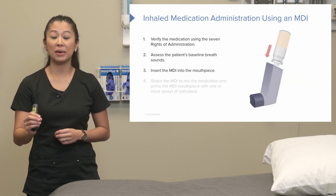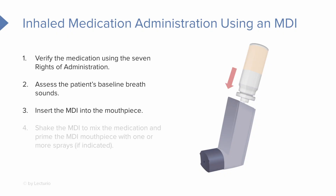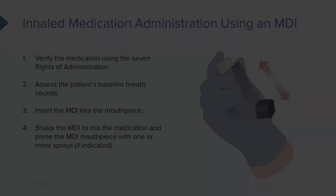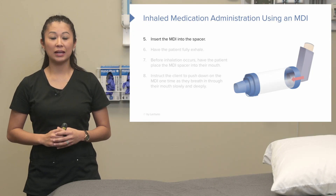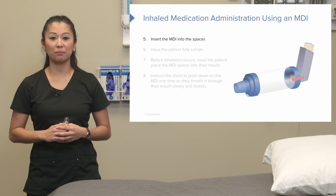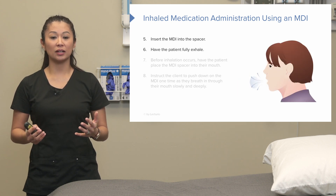Now let's talk about medication delivery. Take the drug and put it into the mouthpiece, then shake it up to thoroughly mix the medication. Next, prime the inhaler by pushing the medicine into the mouthpiece and giving it a couple of sprays. We do this before giving it to the patient to get the medication all the way to the end of the mouthpiece. If a spacer is indicated, connect it at this time.